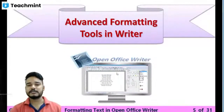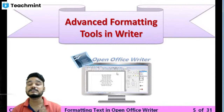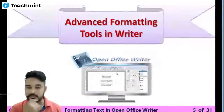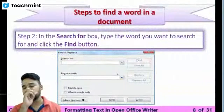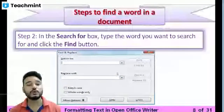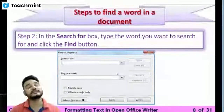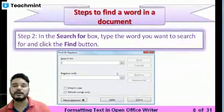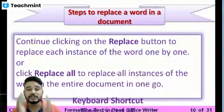Hello and welcome back to another exciting video of Class 4 Computer. We are continuing our ongoing lesson on formatting text in OpenOffice Writer. We have already learned about the find and replace tool — how to replace a particular word by clicking the binocular option to open the find and replace window, where you can replace one word at a time or all words at once.